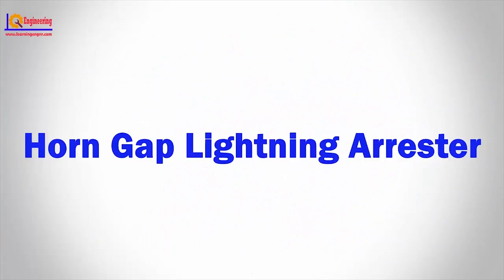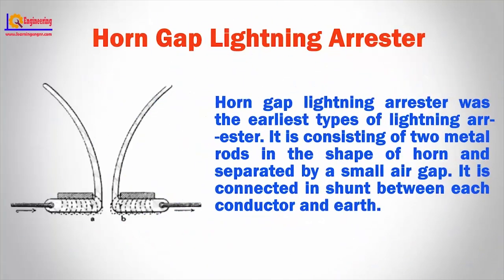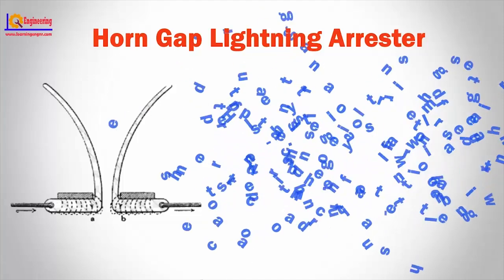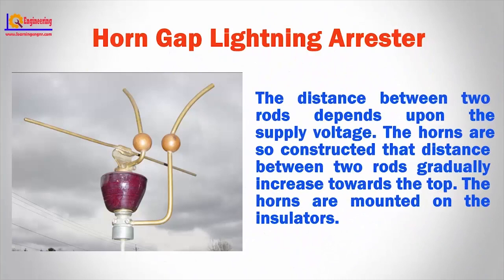Horn gap lightning arrester was the earliest type of lightning arrester. It consists of two metal rods in the shape of a horn, separated by a small air gap. It is connected in shunt between each conductor and earth. The distance between two rods depends upon the supply voltage. The horns are so constructed that the distance between the two rods gradually increases towards the top. The horns are mounted on the insulator.